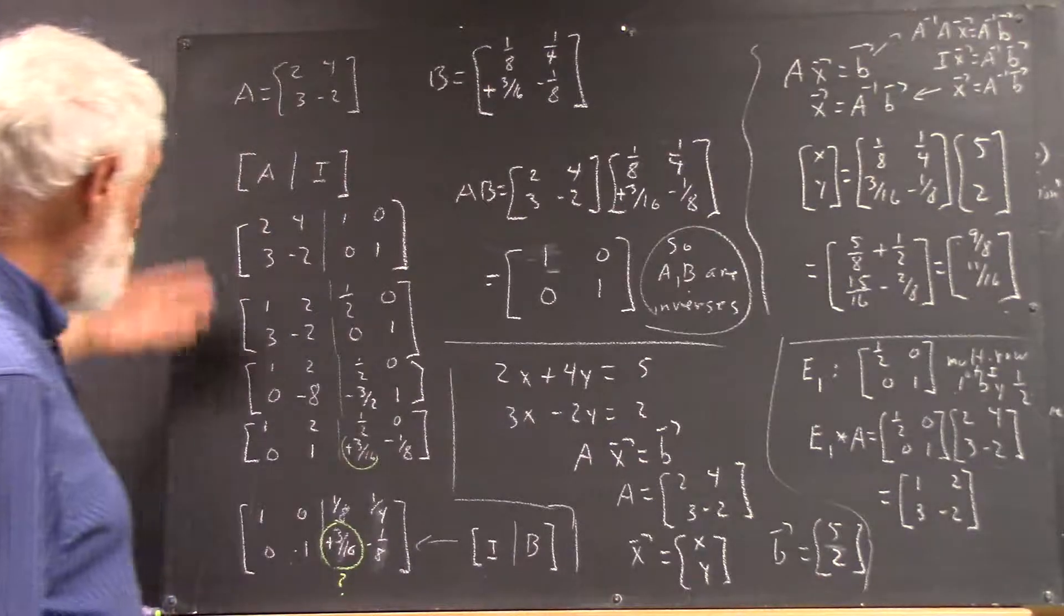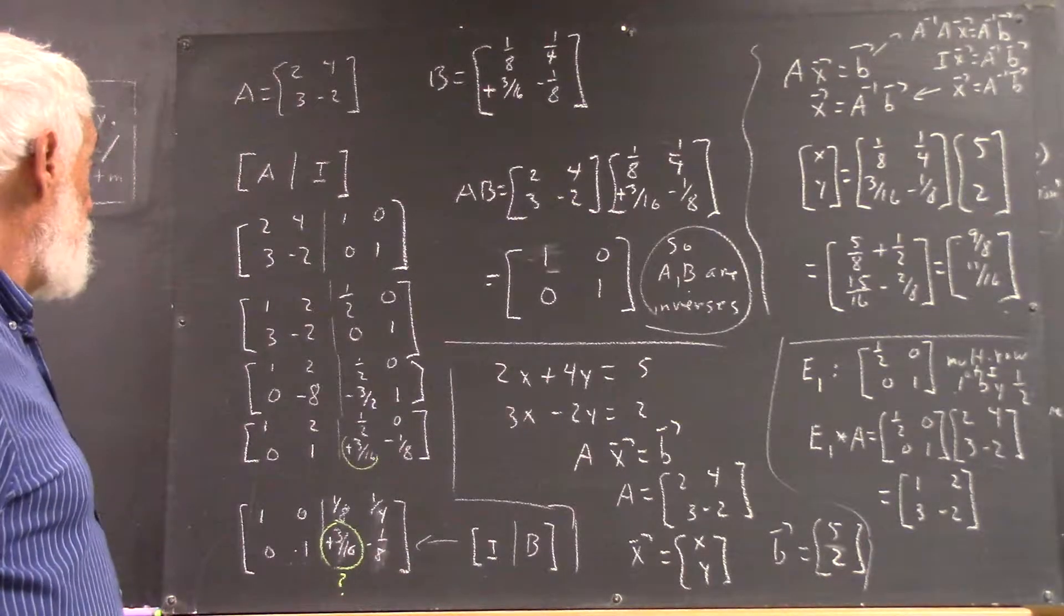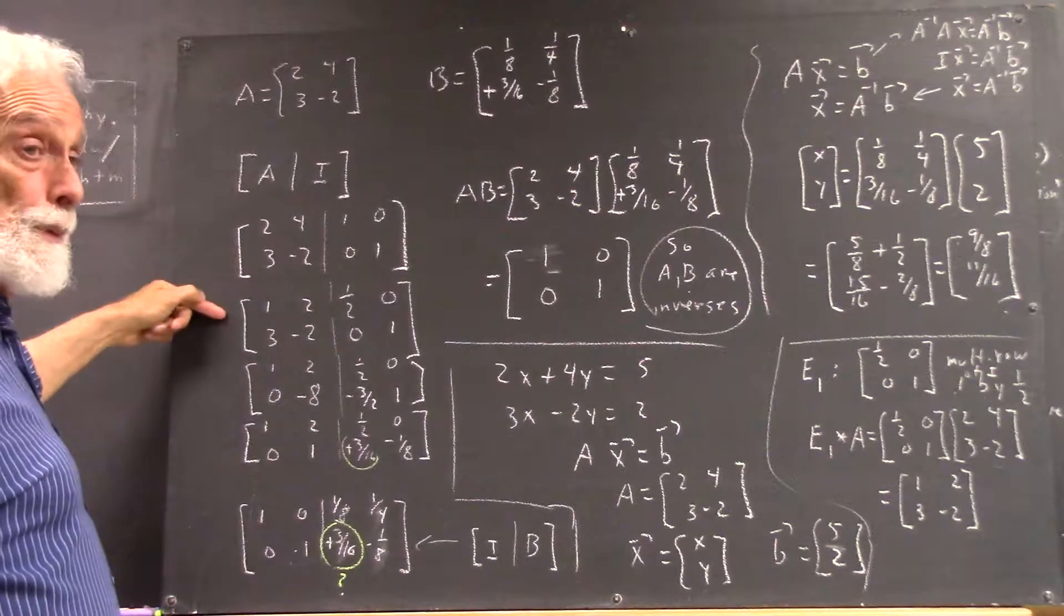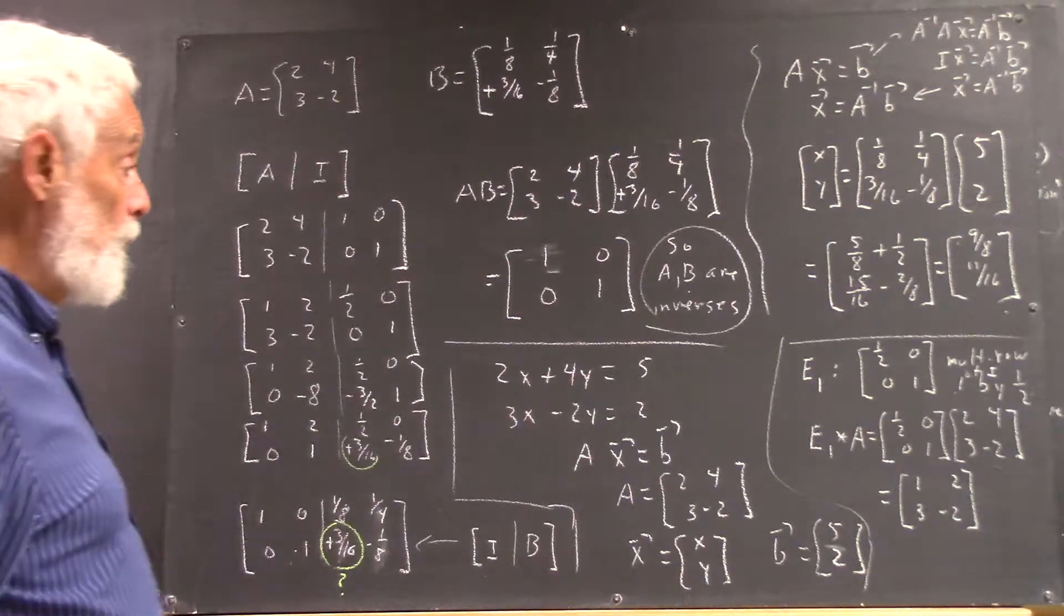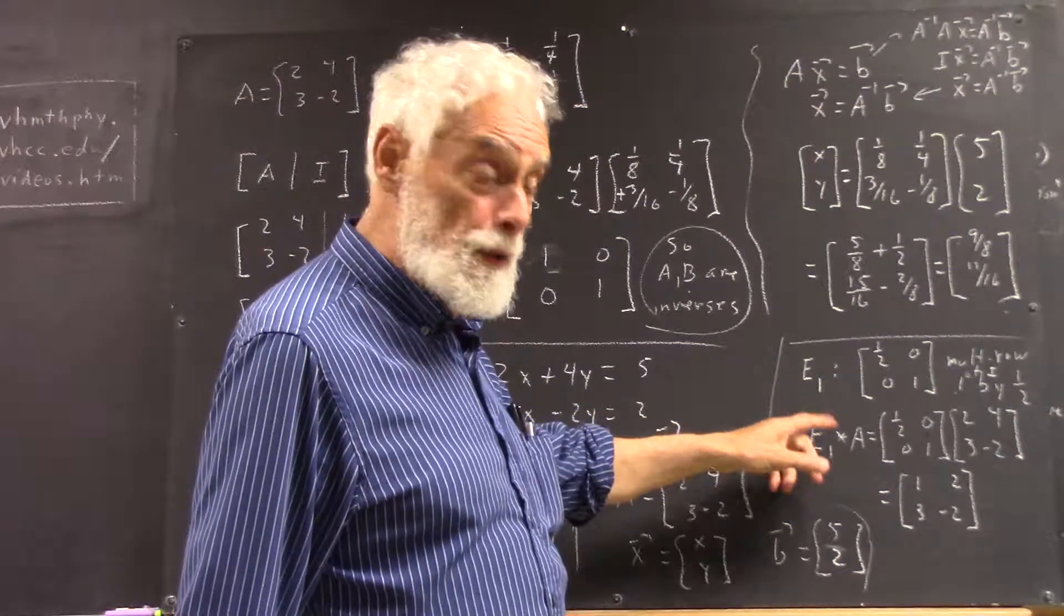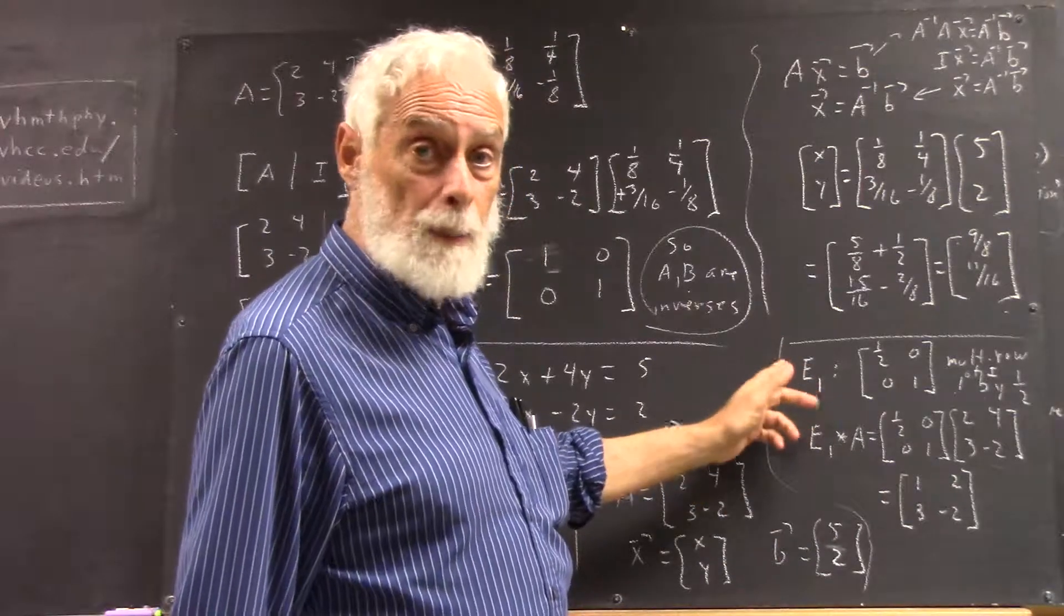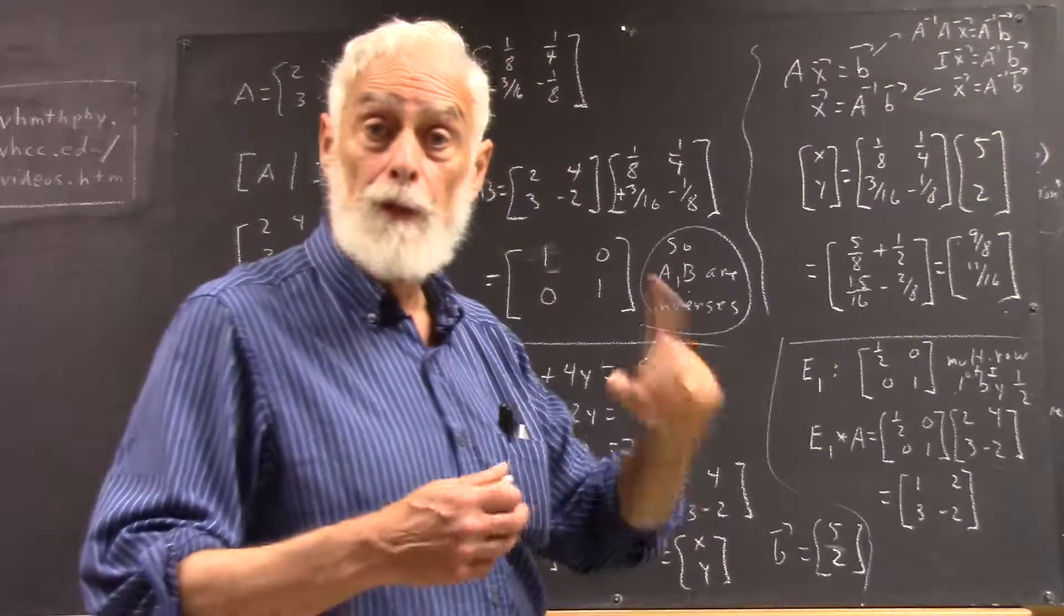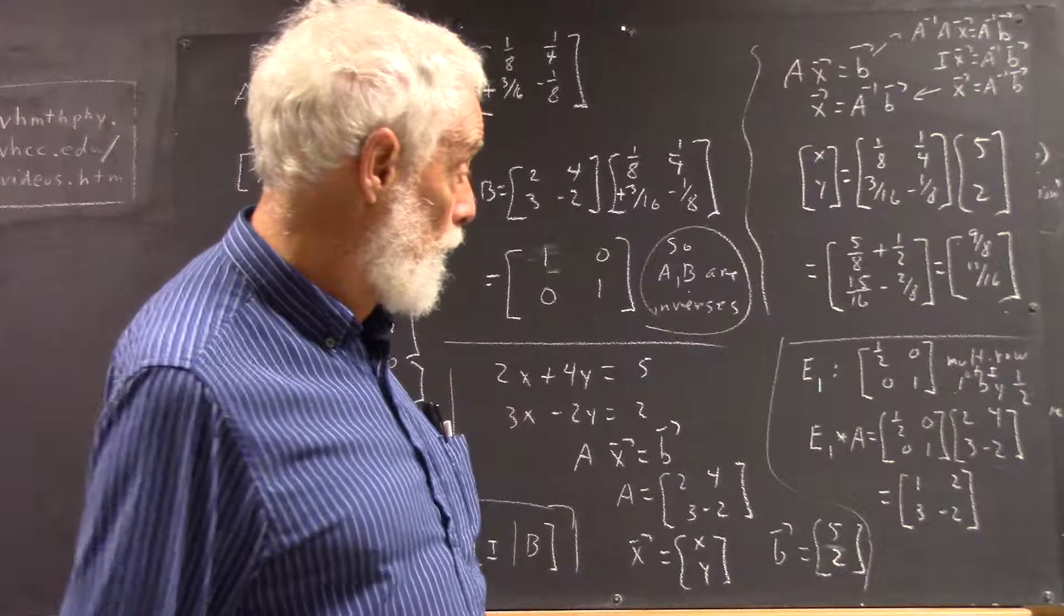Now, I'm going to go back to what we did to reduce the matrix. Remember that our first step here was to multiply the first equation by one-half. We get the matrix which we'll call E1, and that stands for the elementary matrix, and one just happens to be the first elementary matrix. We're going to get four of them.